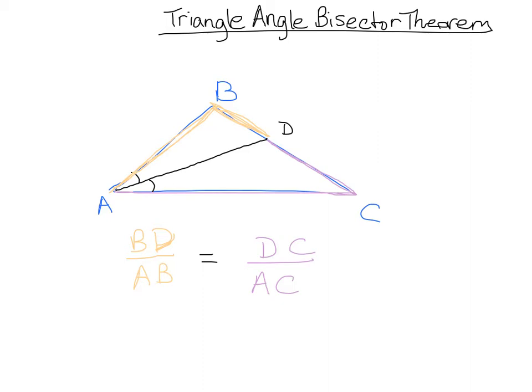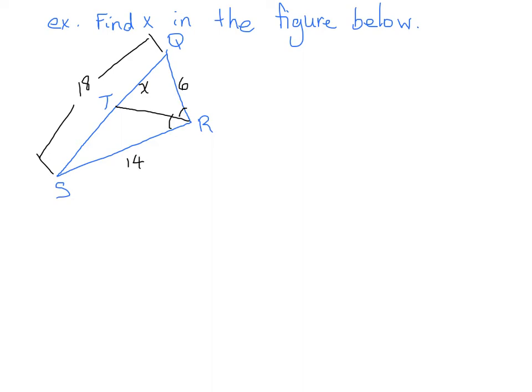So let's take a look at an example. So here we have an angle bisector, and we know it's an angle bisector because it is creating two equal or congruent angles here.